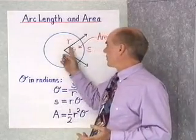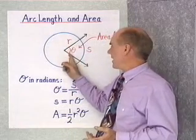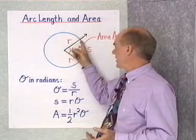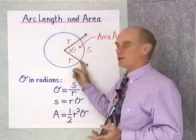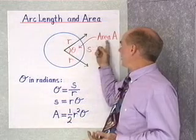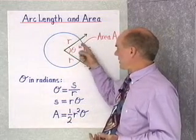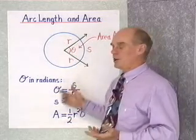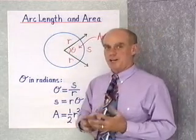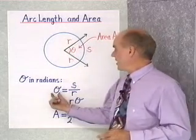Here is a circle with a radius of r and a central angle θ that cuts off an arc of length s. The area A stands for the area of this sector. Here are the formulas when θ is written in radians.